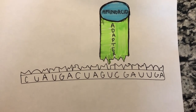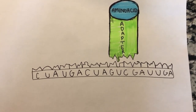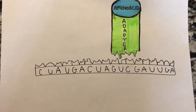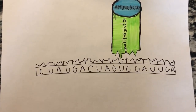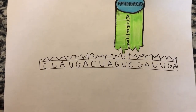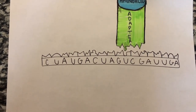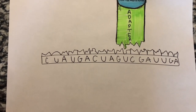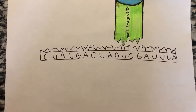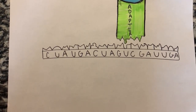Francis Crick suggested that there was an adapter which provided a link containing nucleotides and enzymes between mRNA codons and the amino acid codes. This is how tRNA came into the picture. tRNA, transfer RNA, has an amino acid on its 3' end as well as an anti-codon on the 5' end, which is anti-parallel and complementary to the mRNA codons.